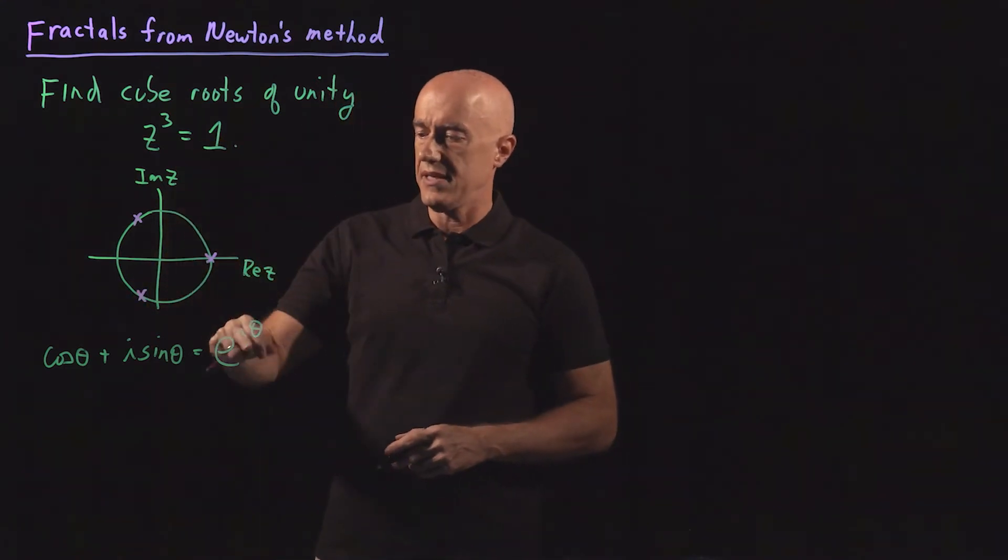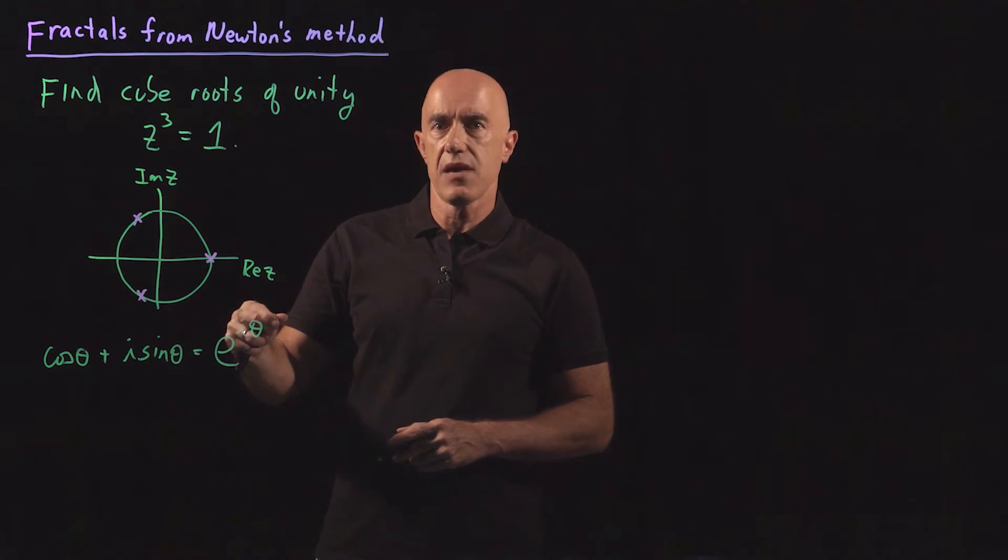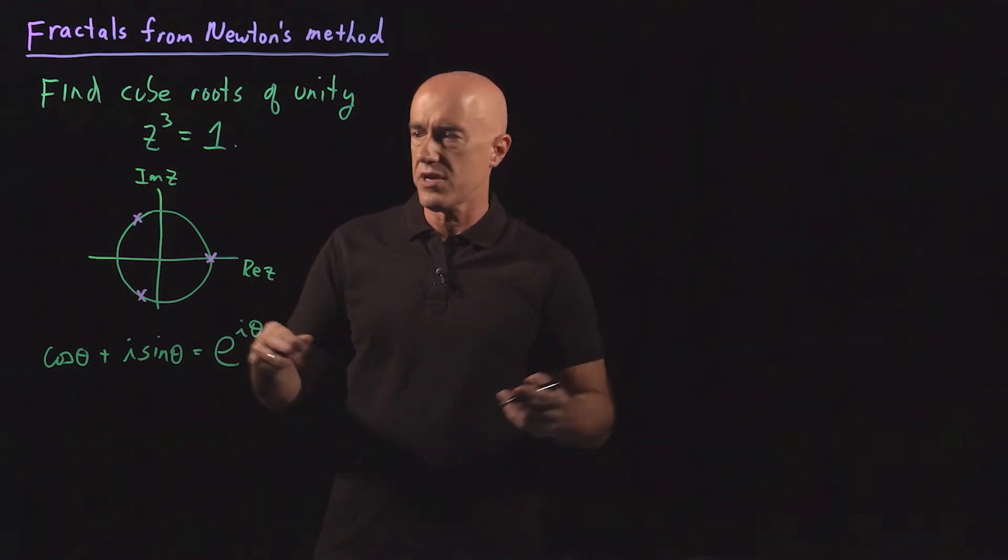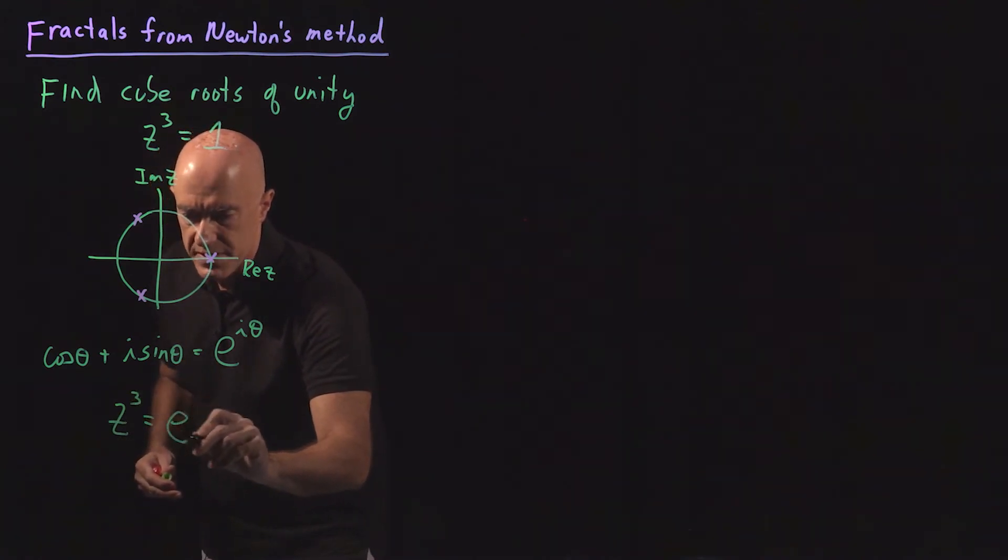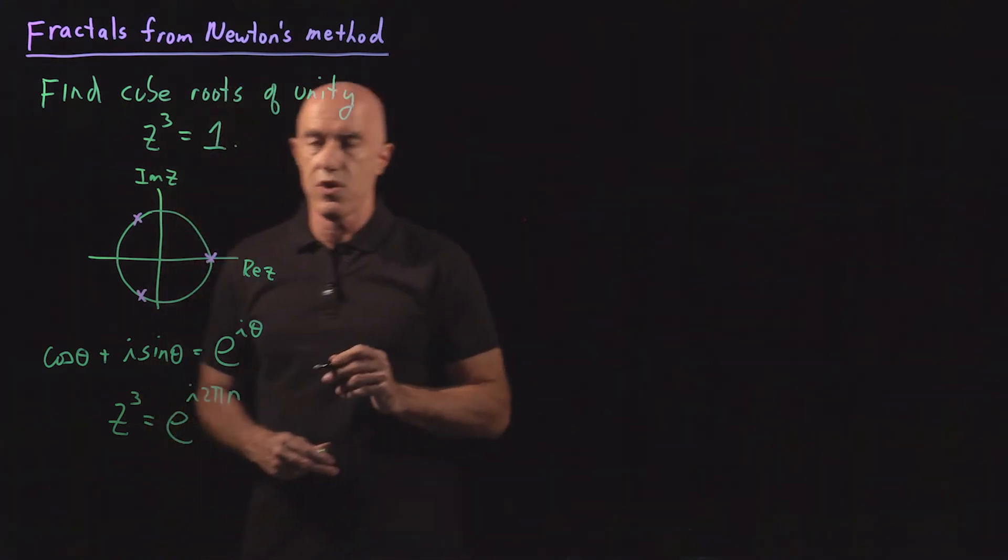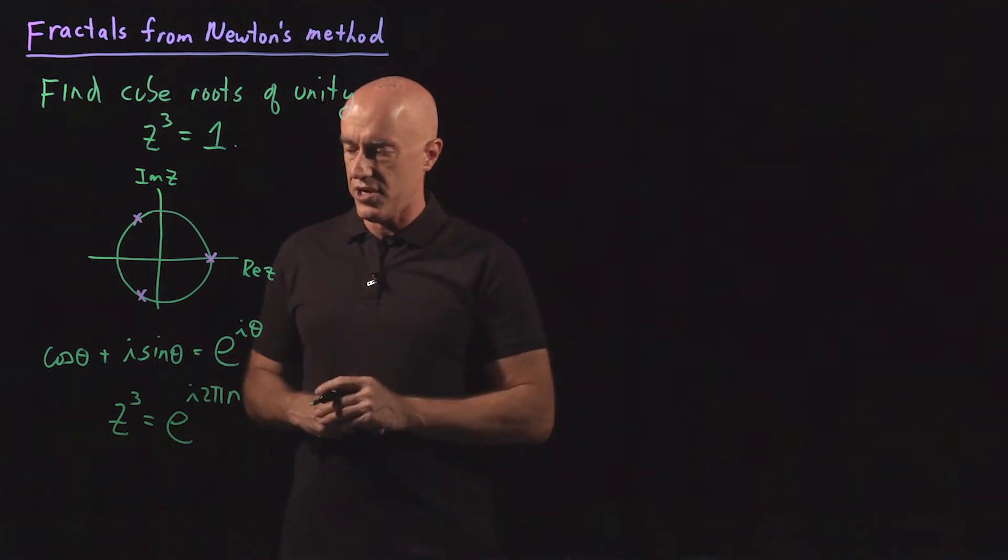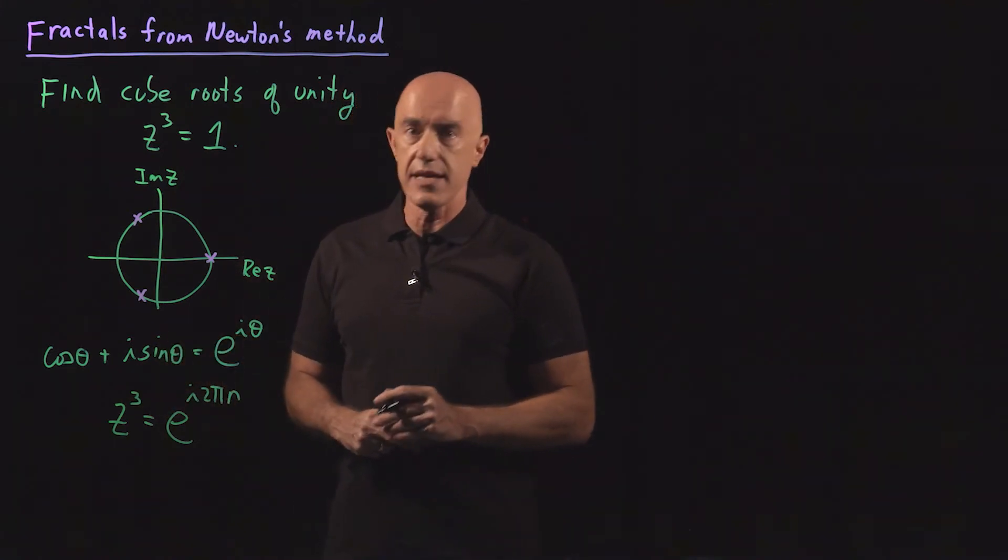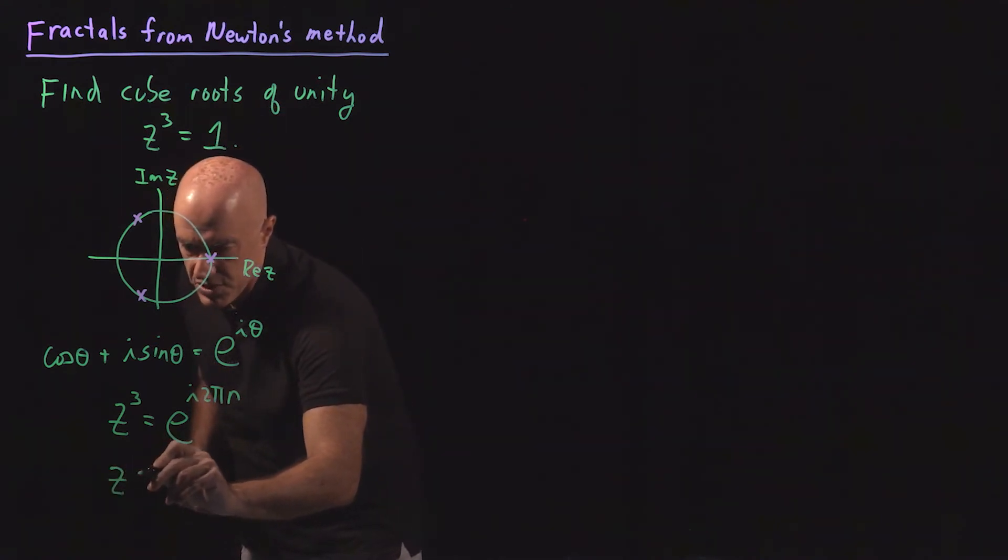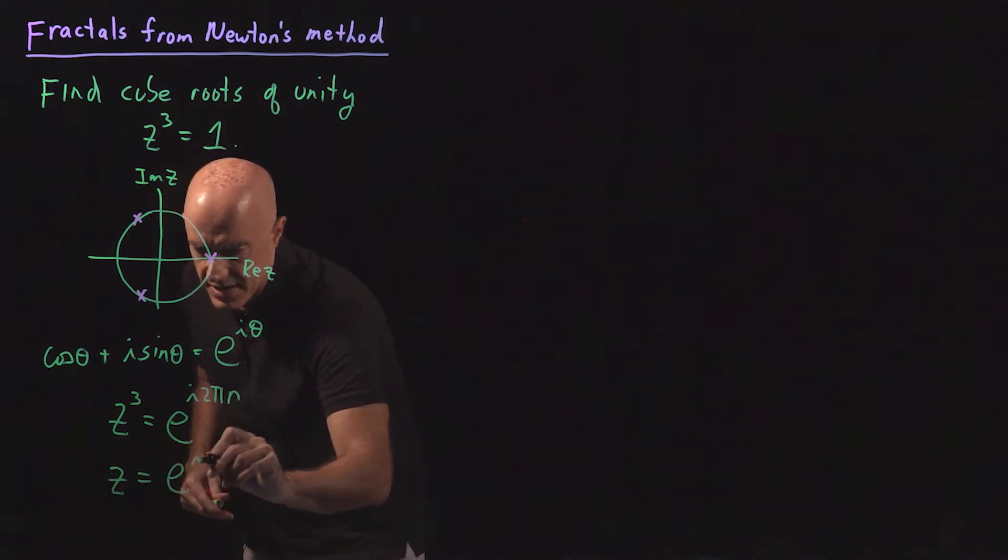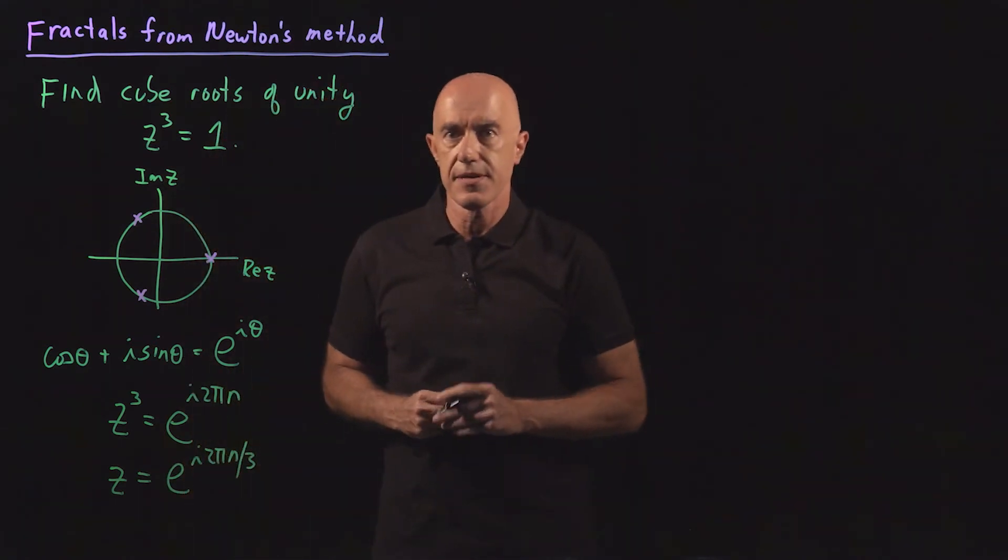We can write 1 as e to the i 2 pi, and then we can square that or cube that. So we can write the equation z cubed equals 1 as z cubed equals e to the i 2 pi times n, where n is an integer. Then we can take the cube root. So we get the cube roots of unity: e to the i 2 pi n divided by 3.